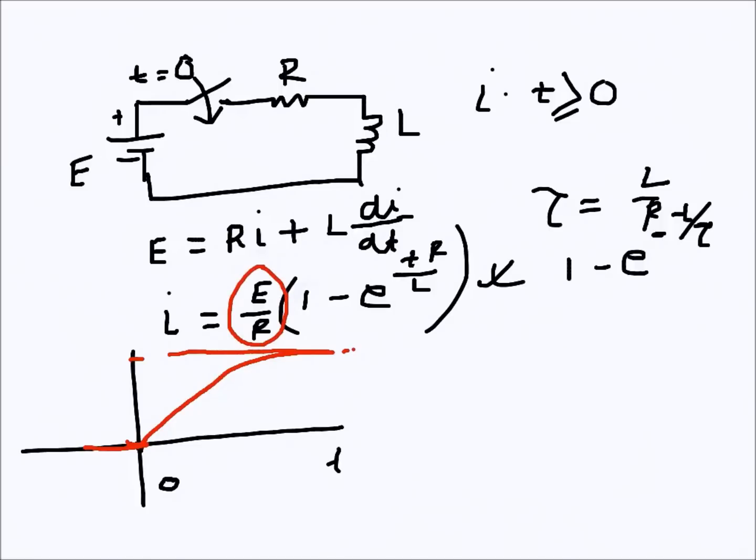It will reach a constant value afterwards which is E/R. So inductance is initially acting as an open circuit and later on becoming a short circuit because of this DC. This is very much similar to the voltage characteristics of a capacitor.